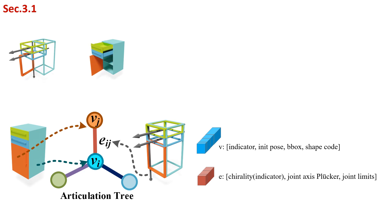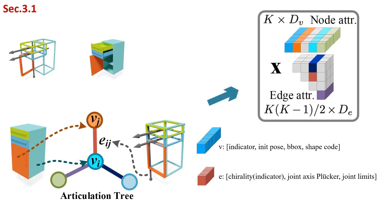We then represent the articulation joint between rigid parts as an edge in the tree, with its chirality, joint axis plucker coordinates in the global frame, and the joint limits. We pre-define a max number of rigid parts and pad the articulation tree to a complete graph, so that each node and edge also has an indicator attribute. In summary, an irregular articulated object can be converted to a regular articulation graph attributes list, and any joint motion given the joint state as input can be easily recovered from this representation. Please see section 3.1 for more details.